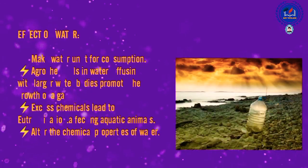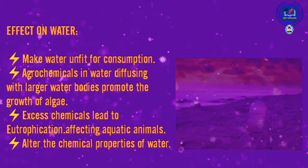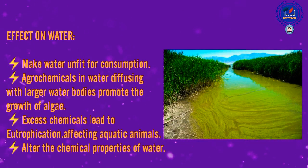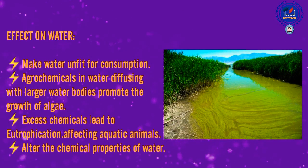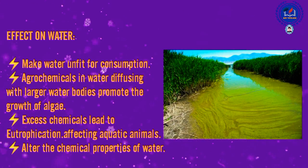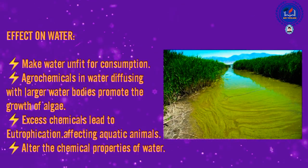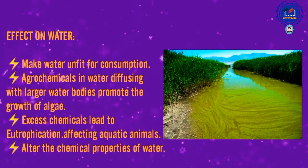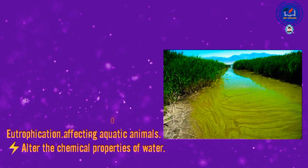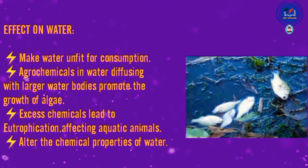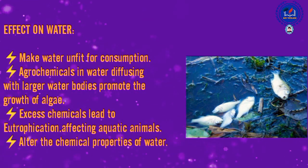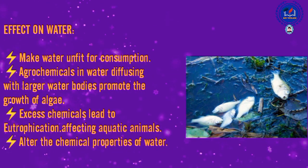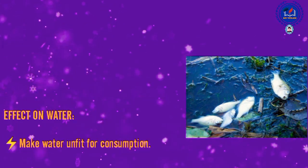Effect on water: agrochemicals can make water unfit for consumption. Agrochemicals diffusing into larger water bodies promote the growth of algae, and excess chemicals lead to eutrophication. This leads to water pollution, thereby affecting aquatic animals, and alters the chemical properties of water.